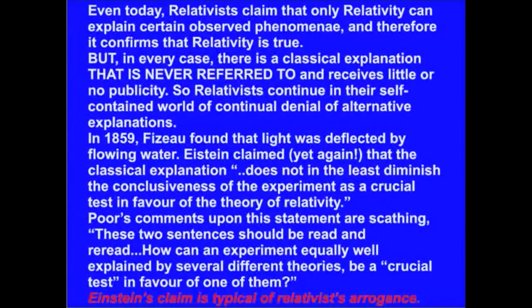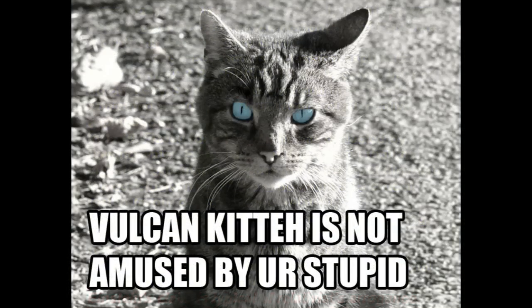Even today, relativists claim that only relativity can explain certain observed phenomena, and therefore it confirms that relativity is true. But, in every case, there is a classical explanation that is never referred to and receives little or no publicity. Yes, in every case where there is a relativistic explanation, there is a classical one, namely the relativistic one. You do know that relativity is a classical theory, right? Classical physics includes everything except quantum mechanics. Also, the reason why non-relativistic explanations of relativistic phenomena aren't getting any attention is that they simply don't hold up, since they, by definition, don't take relativistic effects into account. It's like explaining electromagnetism without taking charge into account. It's a non-starter.